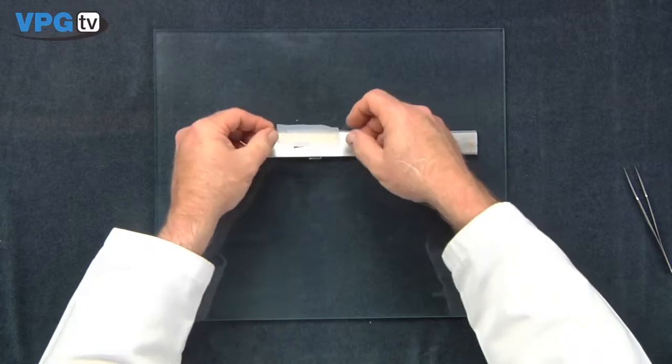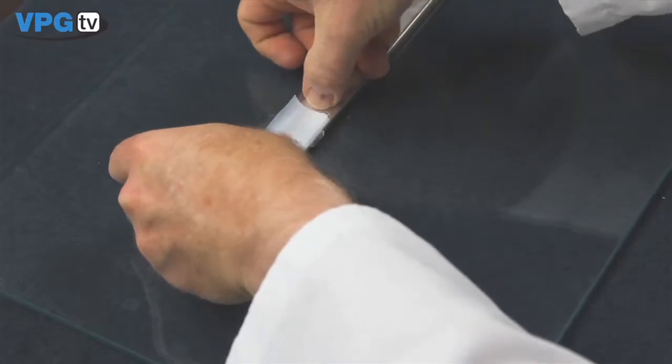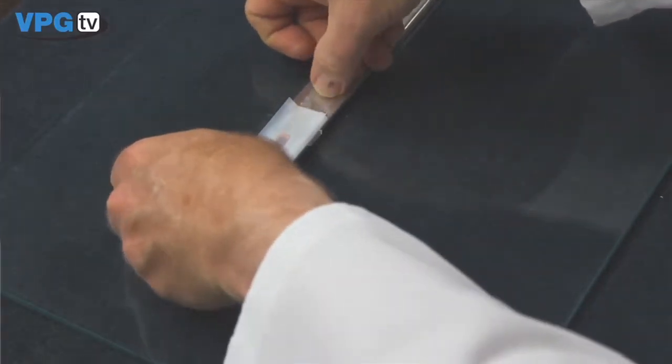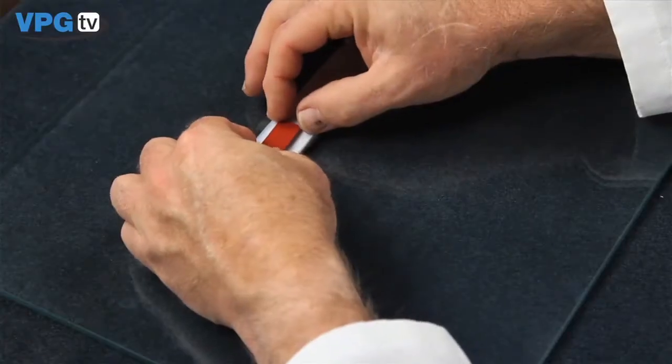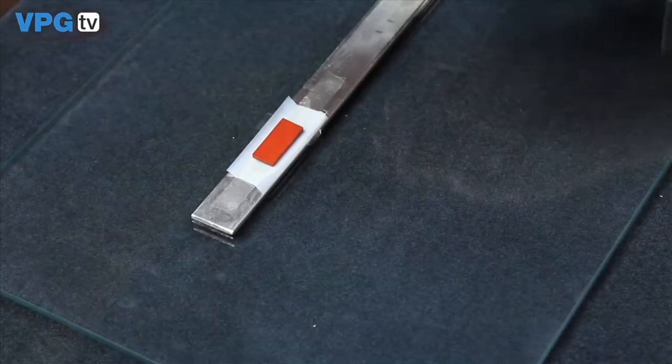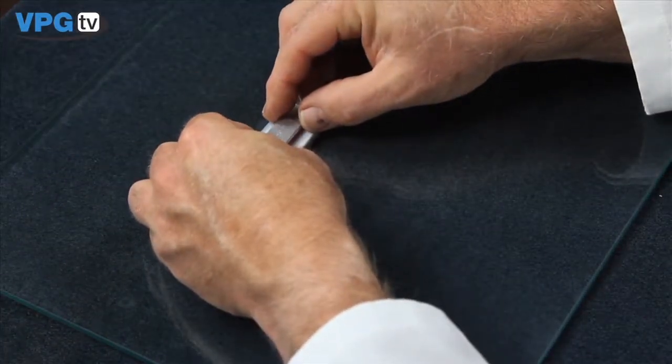Step four will cover clamping and M-Bond 610 cure requirements. Secure a short length of Teflon film over the gauge with two small pieces of Mylar tape. Place a silicon rubber pad on the Teflon directly over the gauge. To distribute the clamping force evenly, center a metal backup plate over the pad.